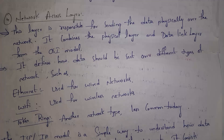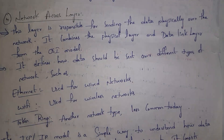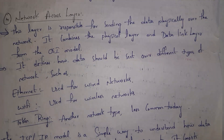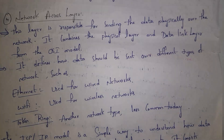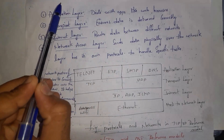The last layer is the Network Access Layer, which is a combination of the Physical Layer and the Data Link Layer from the OSI model. The Network Access Layer is responsible for sending data physically over the network — either through wires or wirelessly. The Network Access Layer decides how data should be sent over different types of networks. Since TCP/IP contains only four layers, this model is simpler to understand.